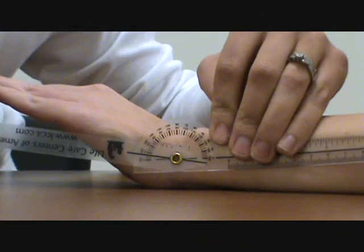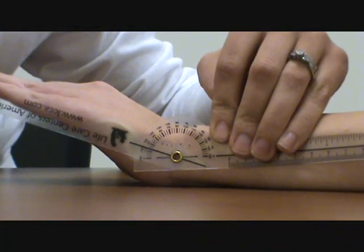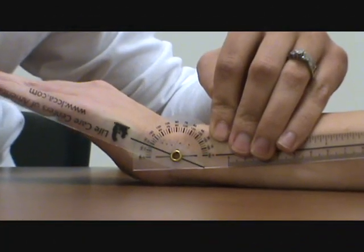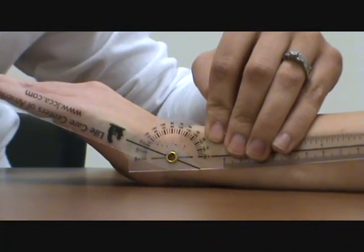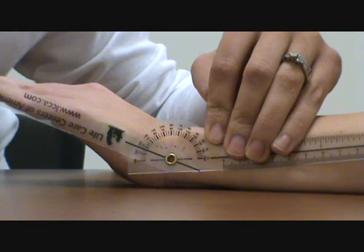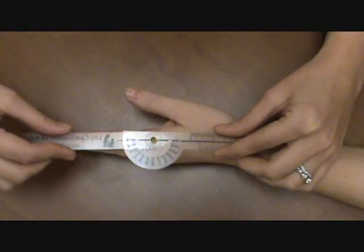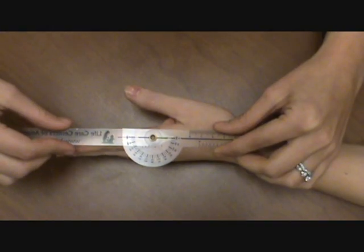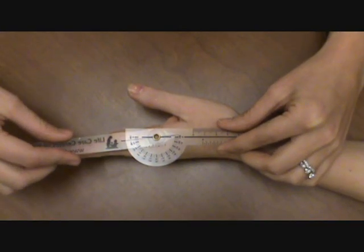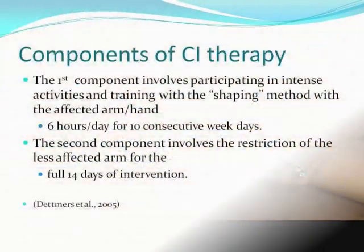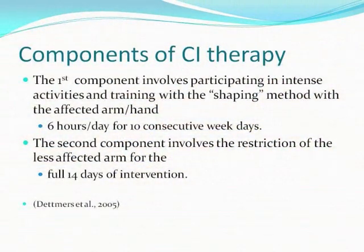Active extension means that the stroke survivor is able to move his wrist 20 degrees and fingers 10 degrees on his own with the power of his own muscles and without assistance from an outside source.